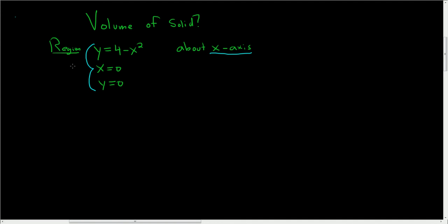So first, let's think about what y equals 4 minus x squared looks like. That's an upside-down parabola shifted up by 4, so it's going to look something like this.